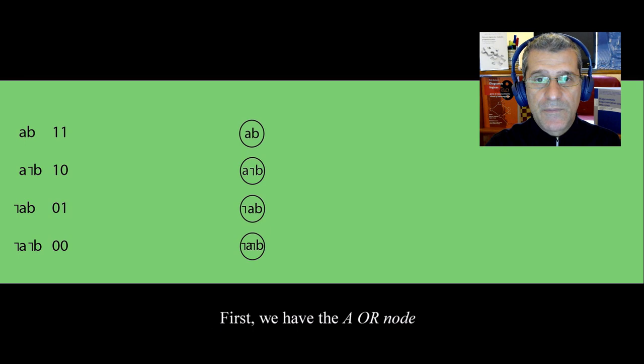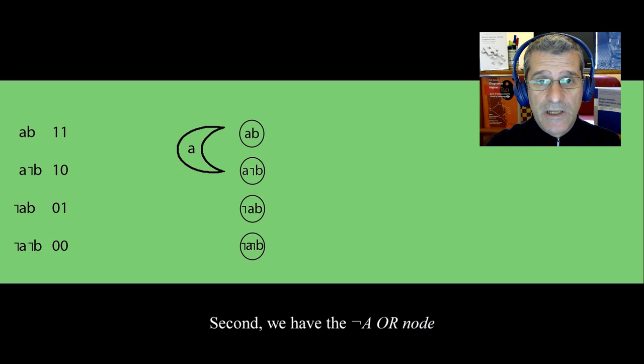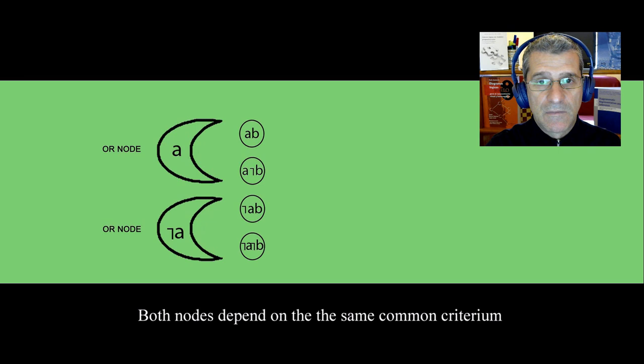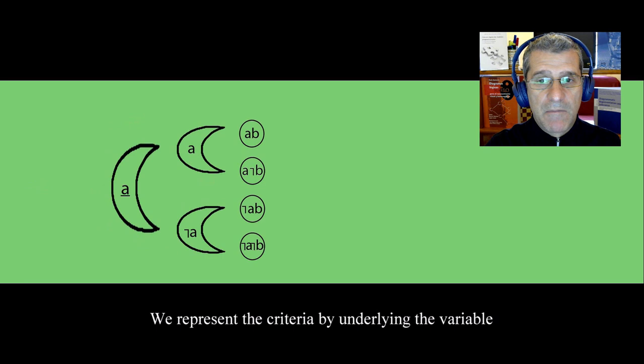First, we have the OR node A. Both nodes depend on the same common criterion. We represent the criteria by underlying the variable.